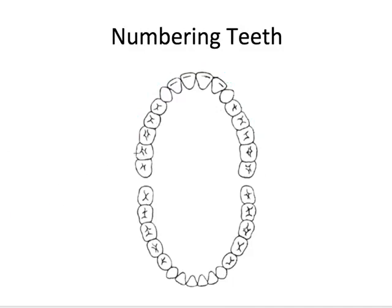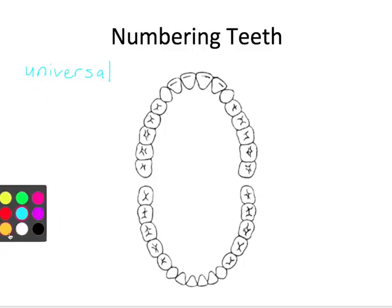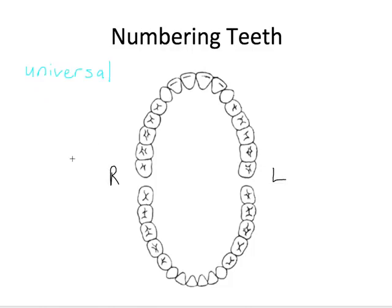How about for numbering teeth? Numbering teeth can be a little complicated at first, but it is super important in the dental field so professionals know which teeth are being discussed. I'll talk about the universal notation system — there are a couple out there, but the universal system is probably the most commonly used. It's basically like reading a book: you start in the upper left corner and move to the right. We start at the upper right third molar. The left side of the image is actually the patient's right, and the right side is the patient's left.